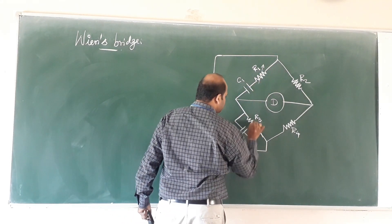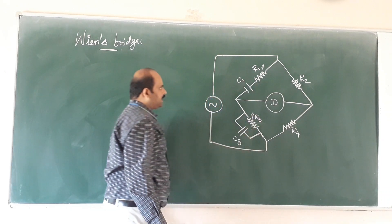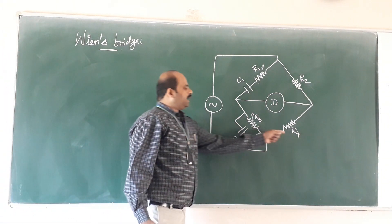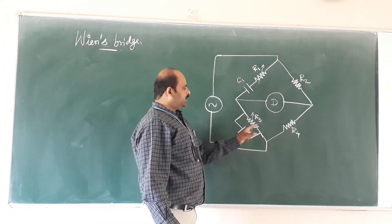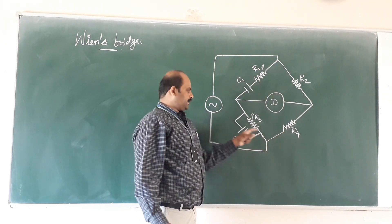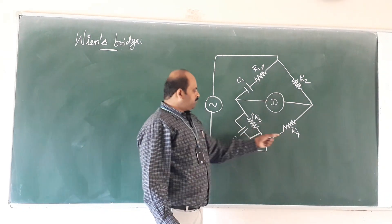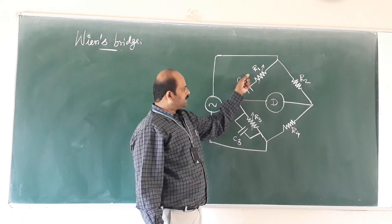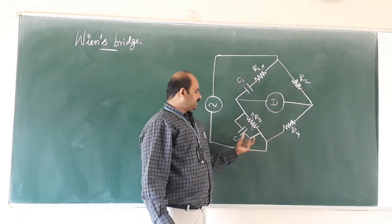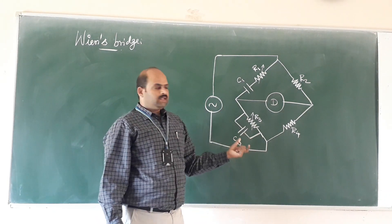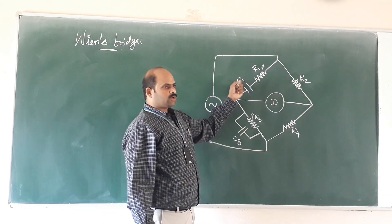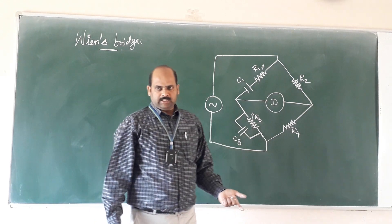The bridge can be balanced by adjusting the arms R1 and R3. R1 and R2 are ratio arms, R4 is the standard arm, and R3 may be the unknown arm. This bridge is used to measure the frequency of the circuit, and the capacitance values C1 and C3 may be calculated accurately.